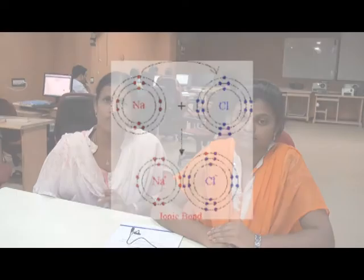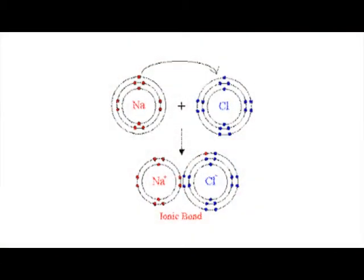For example, sodium has one extra electron in its outer shell. To achieve octet configuration, sodium wants to lose that electron, and chlorine gains that electron from sodium. Finally, these two atoms form a chemical bond. This complete transfer of an electron from sodium to chlorine is called ionic bond formation, and this is a familiar example of ionic bonding.